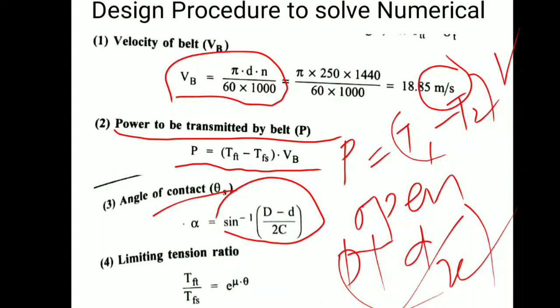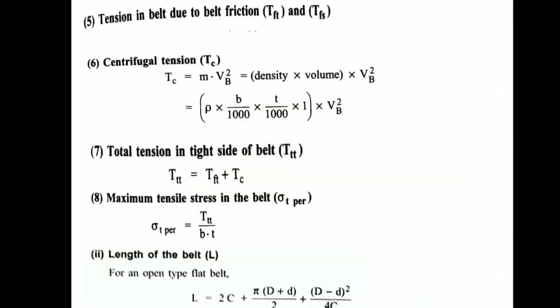Limiting tension ratio: T1/T2 equals e raised to μθ. This will be the fourth step. Next would be the basic tension on the belt, so tension in the belt due to friction. First of all, tension on tight side. They will give the ratio of T1 by T2 and what will be the tension range between T1 and T2.